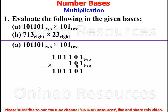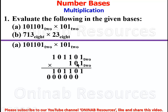We take the next digit, 0, as our multiplier. 0 times 1 gives 0, so we start recording the answer under the zero: 0 times 0 is 0, 0 times 1 is 0, 0 times 1 is 0, 0 times 0 is 0, 0 times 1 is 0. We are done with this 0 as multiplier and pick the next 1.